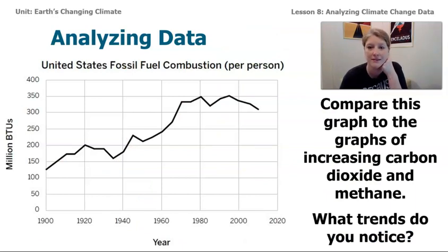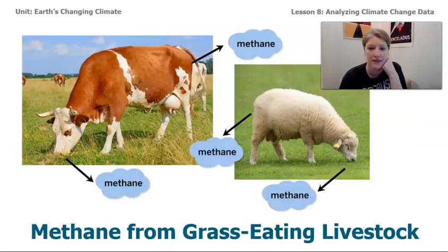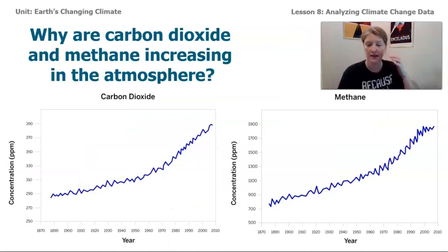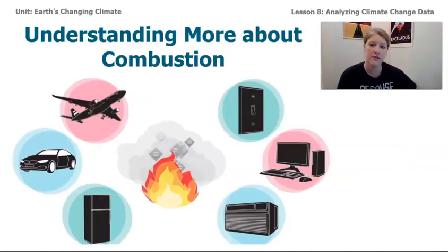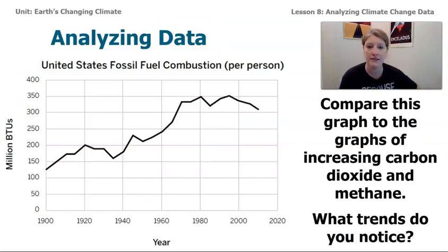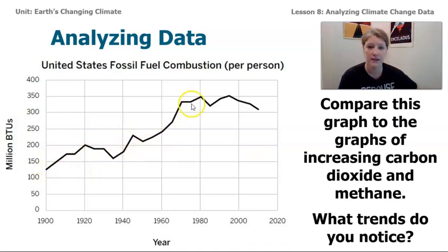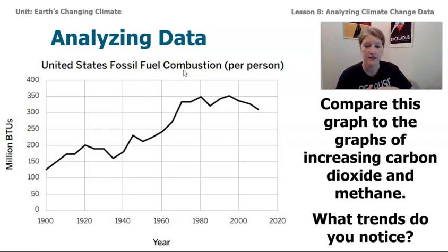As we're looking at these next couple of graphs, I want you to compare them with the carbon dioxide and methane graphs that showed these two gases increasing over time. This first graph is for the United States fossil fuel combustion per person. You can see that this data starts about 1900, and while there are some big fluctuations, over time it seems to be increasing. This graph shows that in the United States, the fossil fuels we are burning has been happening at an increased rate in the last 100 years. But this is only one country, so we should look at some other data as well.